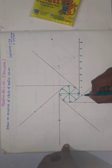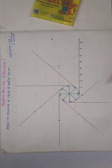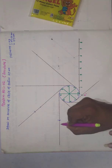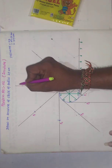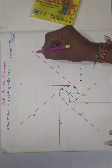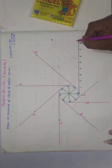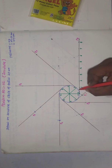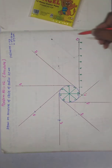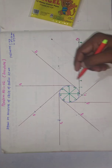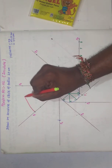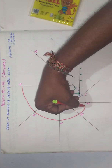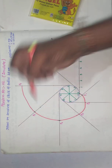You will get all the plotted points: this is P1, this point is P2, this is P3, P4, P5, P6, P7, and the last point is P8. Now join all these points — P0, P1, P2, P3, P4, P5, P6, P7, and P8 — by a smooth curve using a French curve.